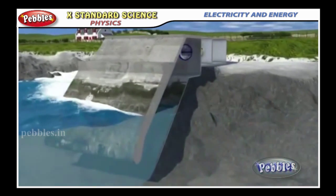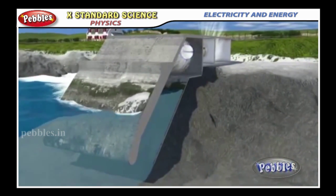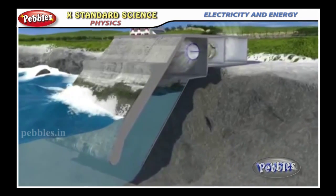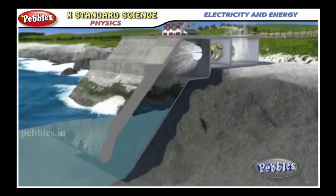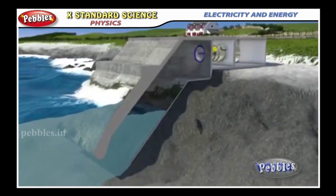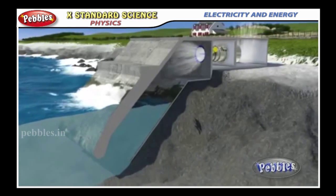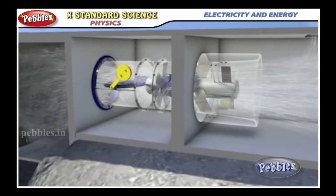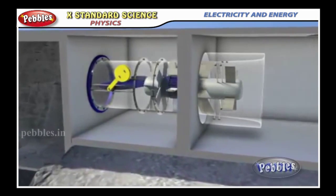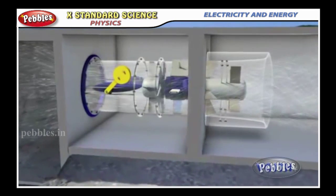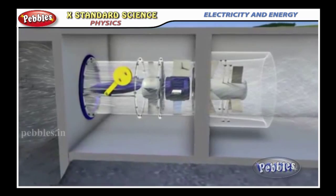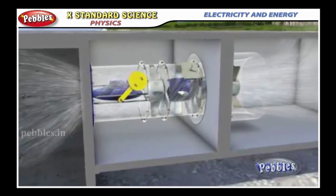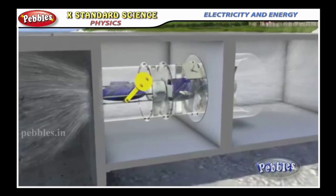Tidal energy is harnessed by constructing a dam across the narrow opening of the sea. A turbine is fixed to the opening of the dam. It converts the tidal energy into electricity.